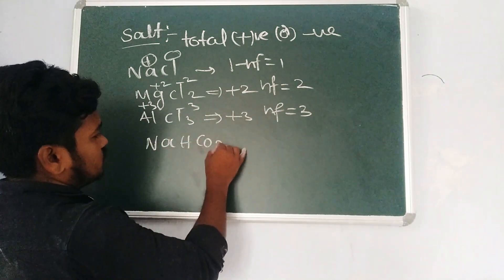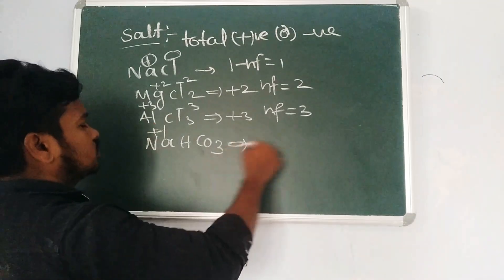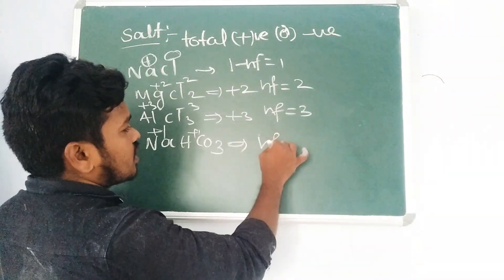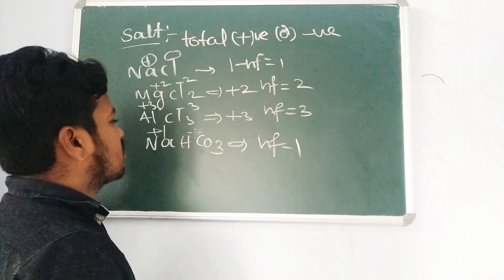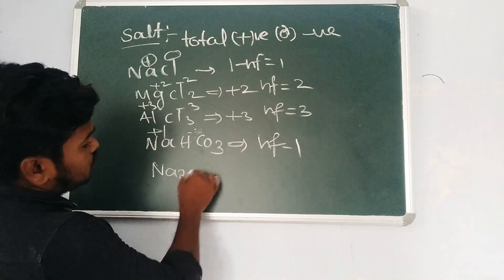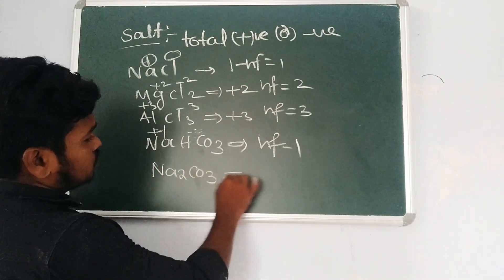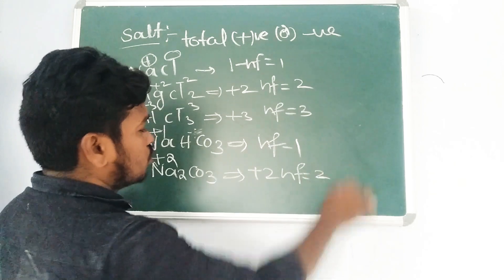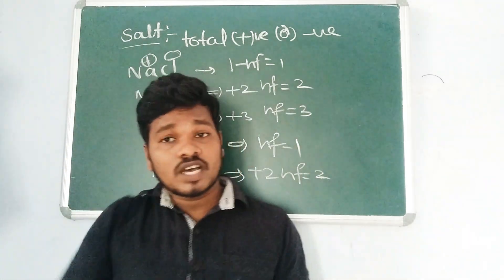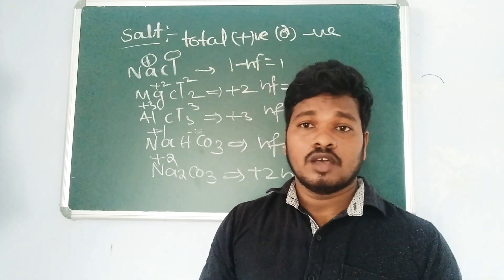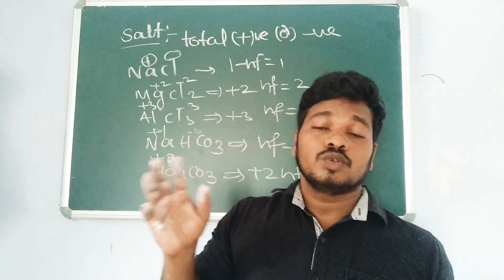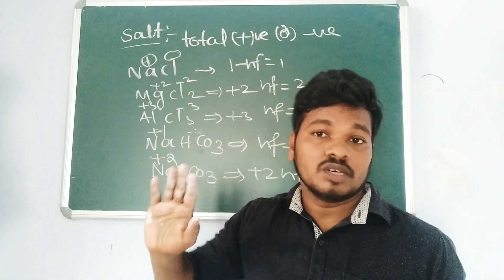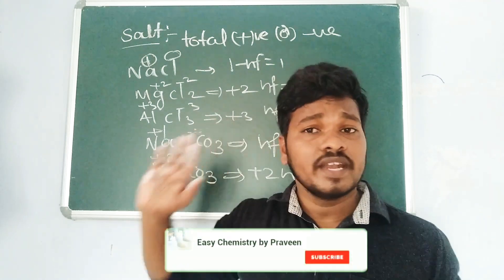For NaHCO₃ (sodium bicarbonate): Na⁺ has a charge of +1, so the n-factor is 1. Important caution: for NaCl you might see Na⁺ (+1) and Cl⁻ (−1) — do not sum both charges. Take only the total positive charge or only the total negative charge, but never add them together.